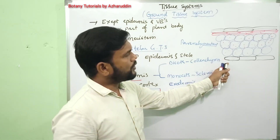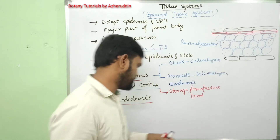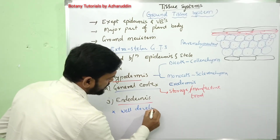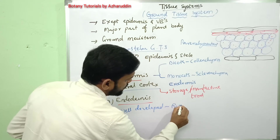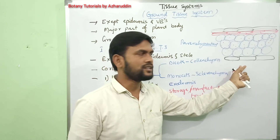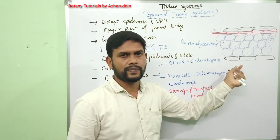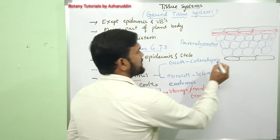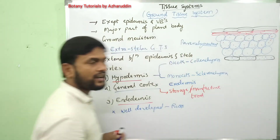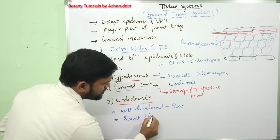In roots, endodermal cells are well developed. But in stems, they are not clearly defined — they are present as a layer composed of starch grains. That is why in stems, the endodermis is called starch sheath.